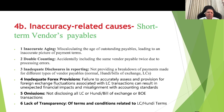Inaccuracy causes for short-term vendors payable: Number one — inaccurate aging, miscalculating the aging of outstanding payables leading to an inaccurate picture of payment terms. Number two — double counting, incidentally including the same vendor payable twice due to processing errors. Number three — inadequate disclosure, not providing a breakdown of payments for different types of vendor payables such as normal, hundi, bills of exchange, and LCs. Number four — inadequate forex provisions, failure to accurately assess foreign exchange fluctuation provisions for LC transactions. Number five — omission of certain LCs, hundis, or bills of exchange. Number six — lack of transparency on terms and conditions related to LC and hundi terms.